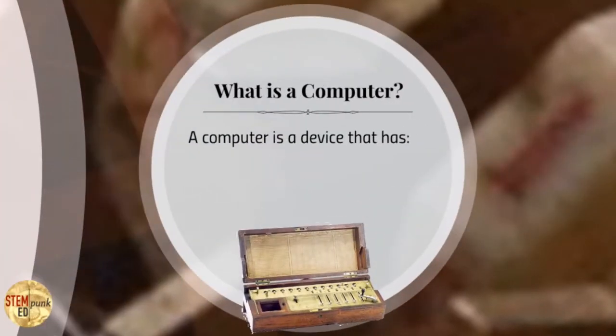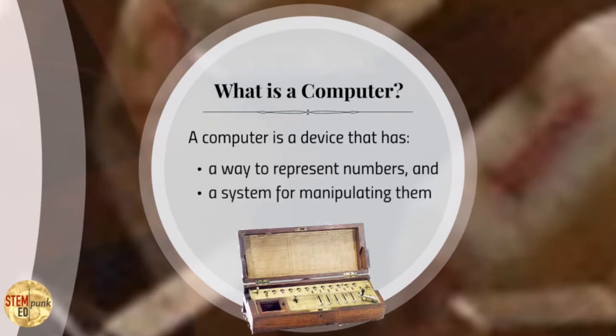This video actually has two parts. It begins by talking about computers and defining them in terms of modern technology. But the most important part is a more expansive definition that encompasses all levels of technology of computers: a device that has a way to represent numbers and a system for manipulating them.